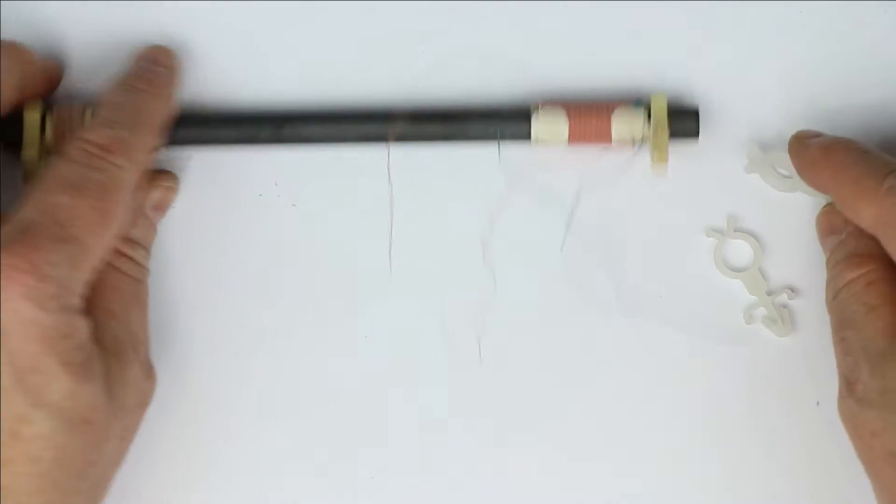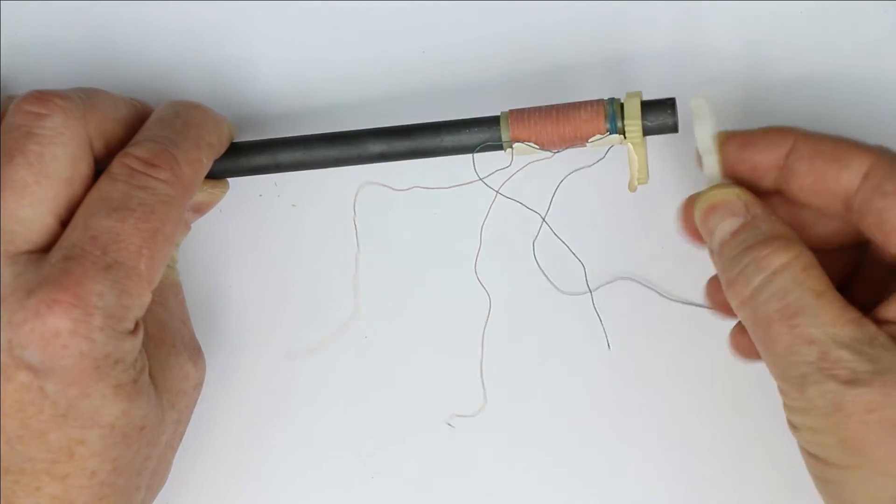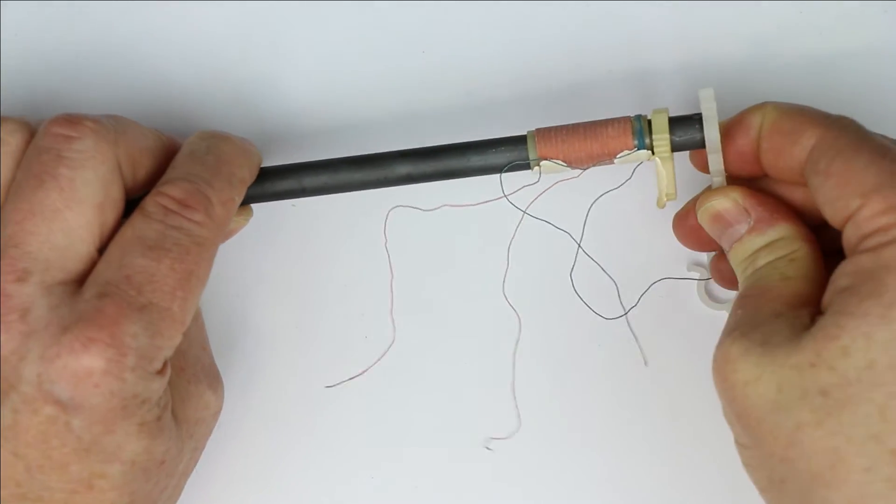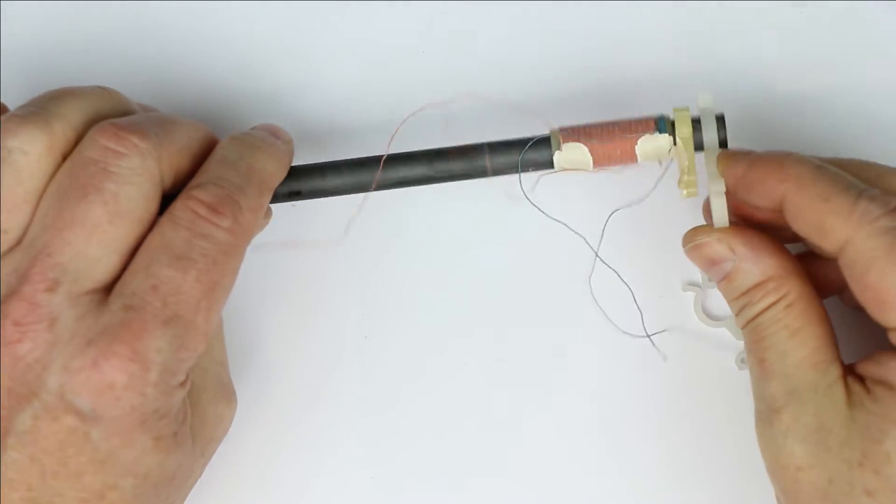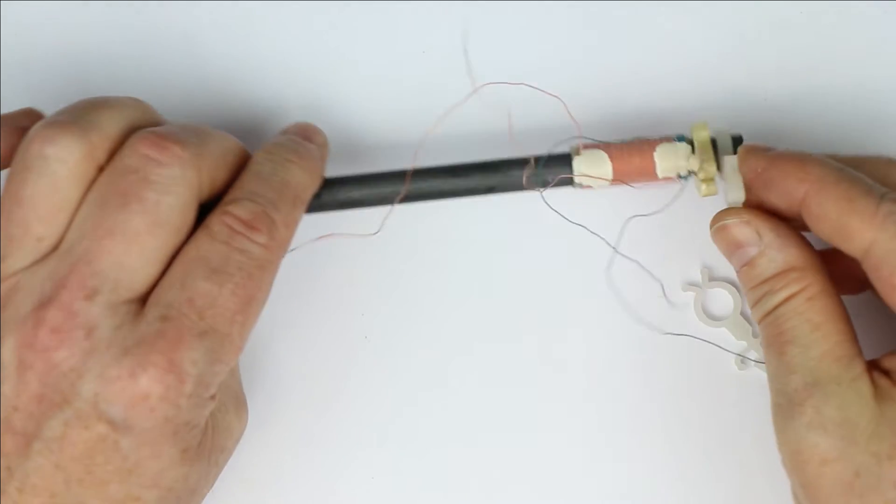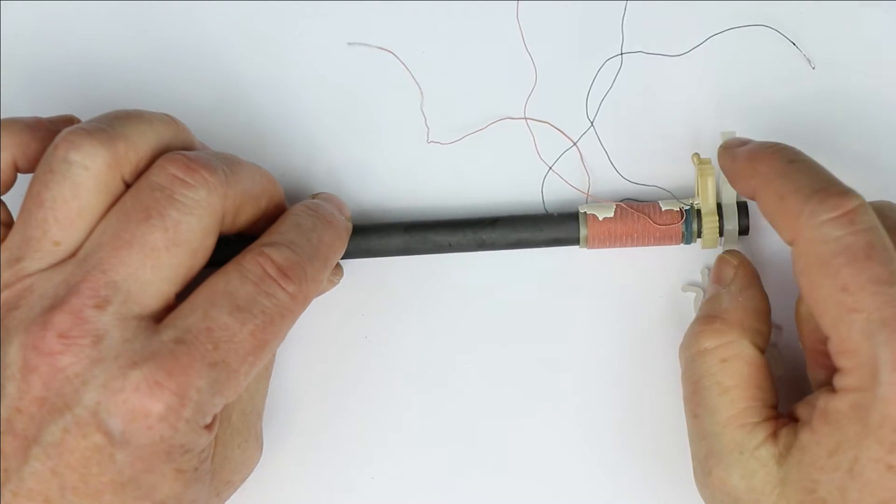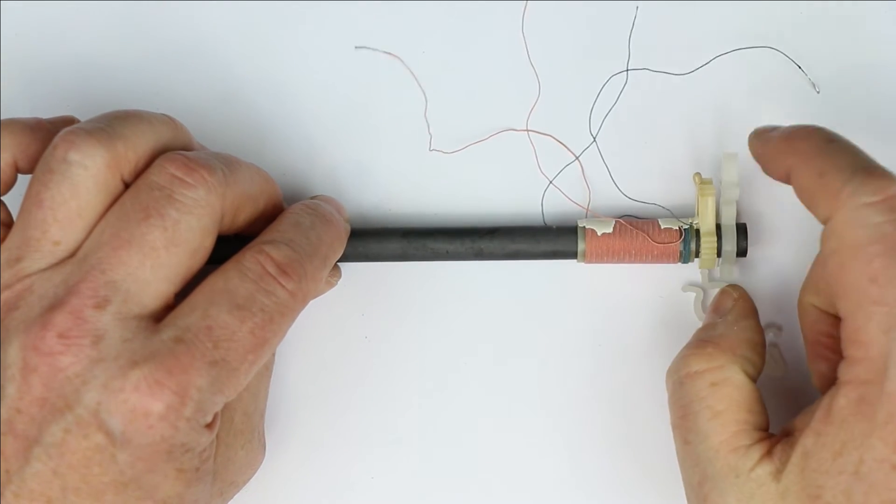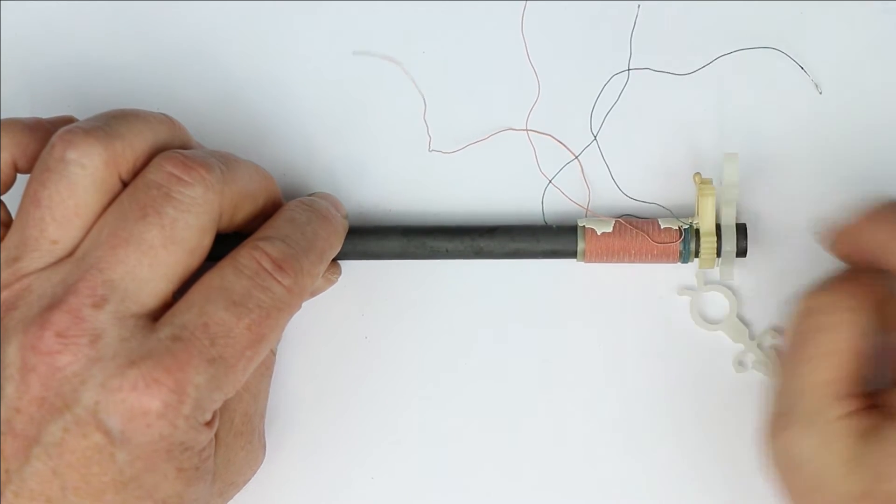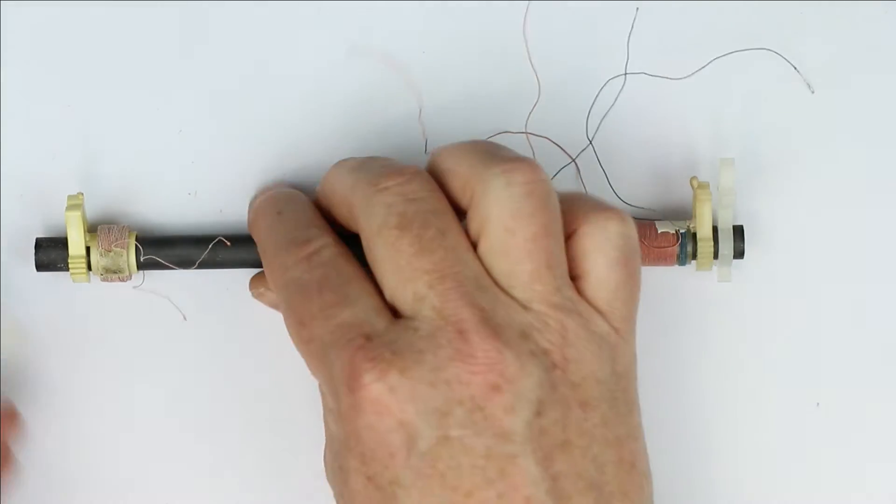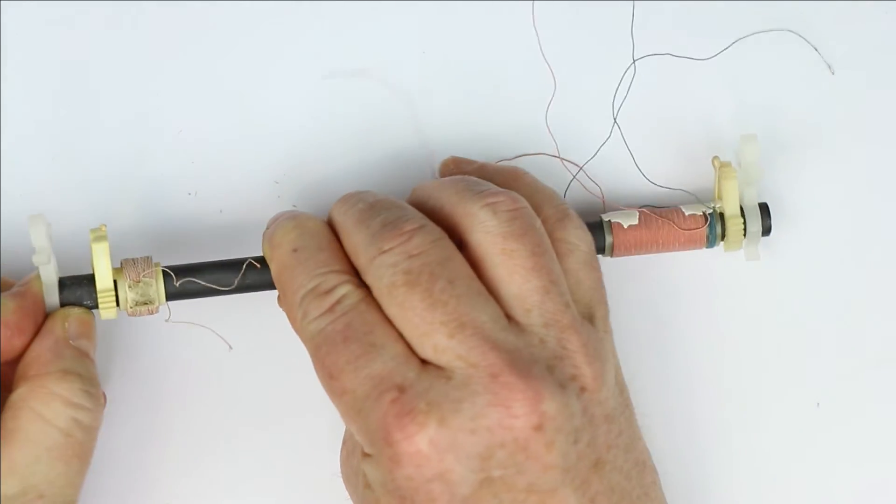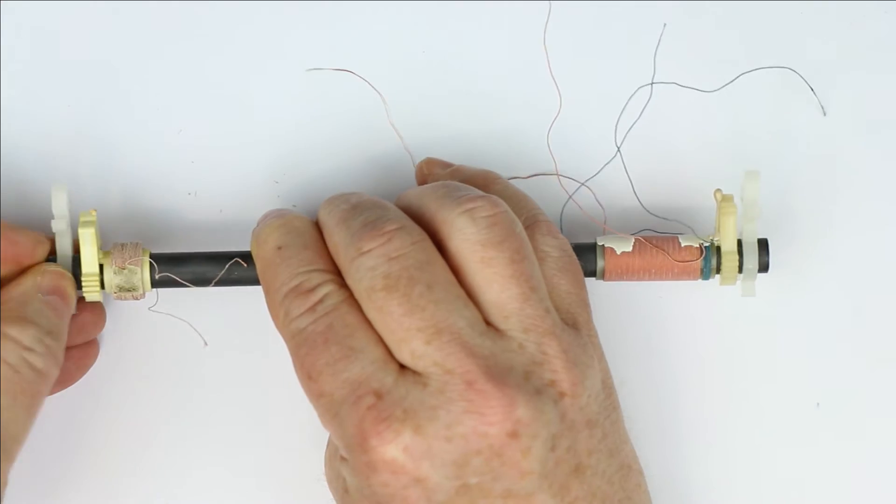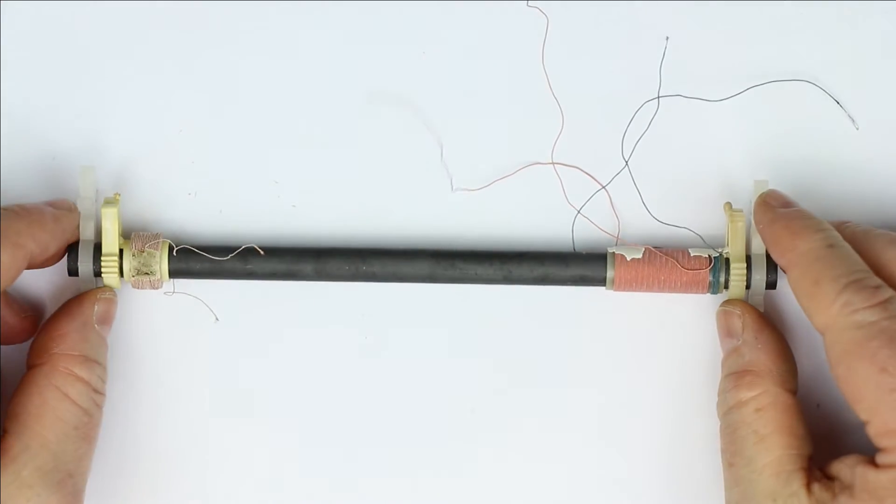And you also get supplied two little standoff clips, but if you want to use them, you have to make fitting holes for yourself into the case or the PCB where you want to use them. So these are the parts the AM antenna kit consists of.